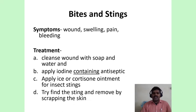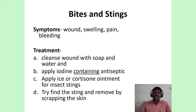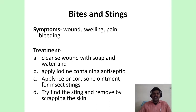The next important injury is bites and stings, which is very common. Symptoms include a wound at the bite site, swelling, pain, and sometimes bleeding. You have to cleanse the wound with soap and water to remove any toxic material. Apply iodine-containing antiseptic solution to prevent secondary infections. Apply ice and hydrocortisone ointment for insect stings. To remove a sting, scrape the skin with a hard cardboard instead of using tweezers, to avoid squeezing venom.